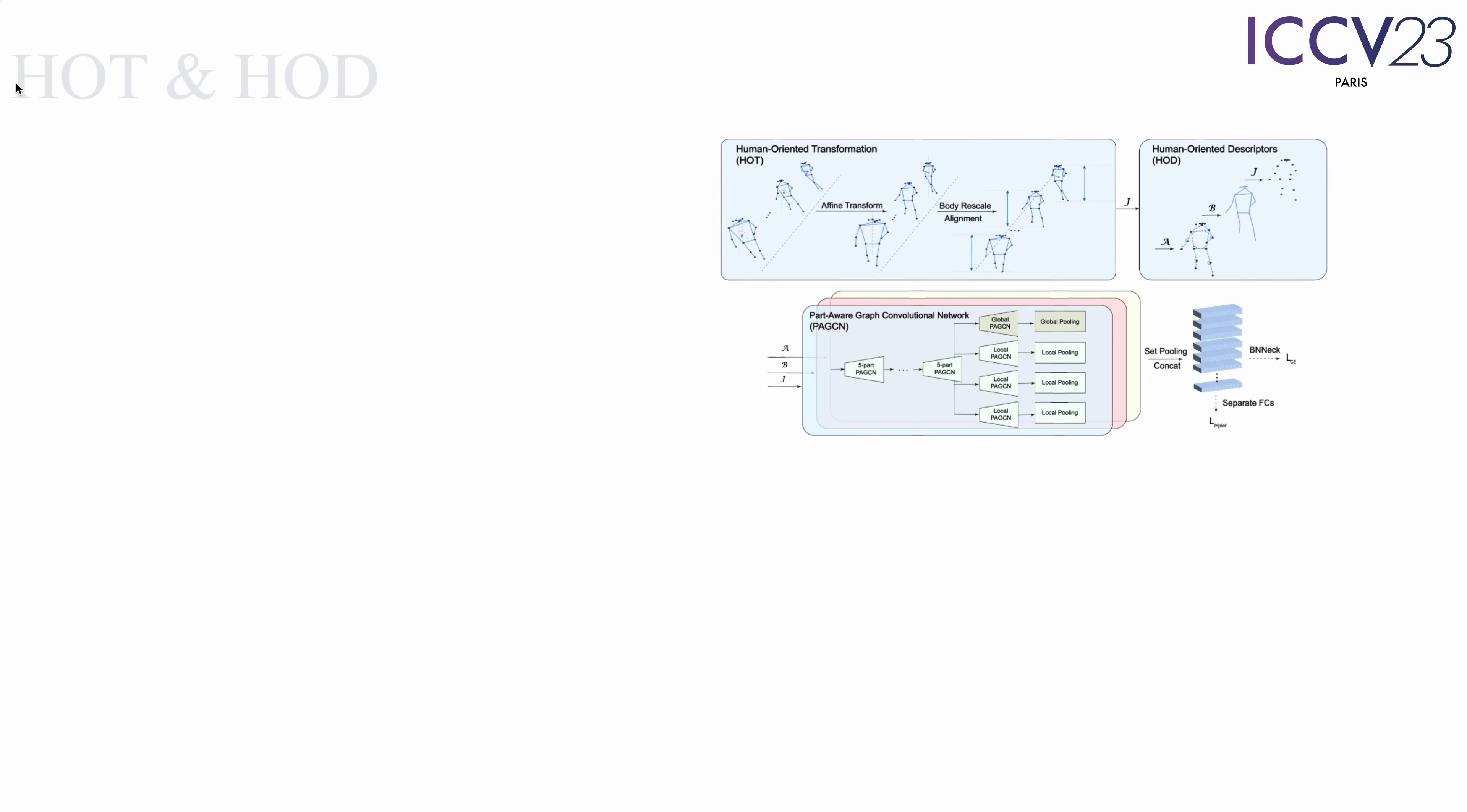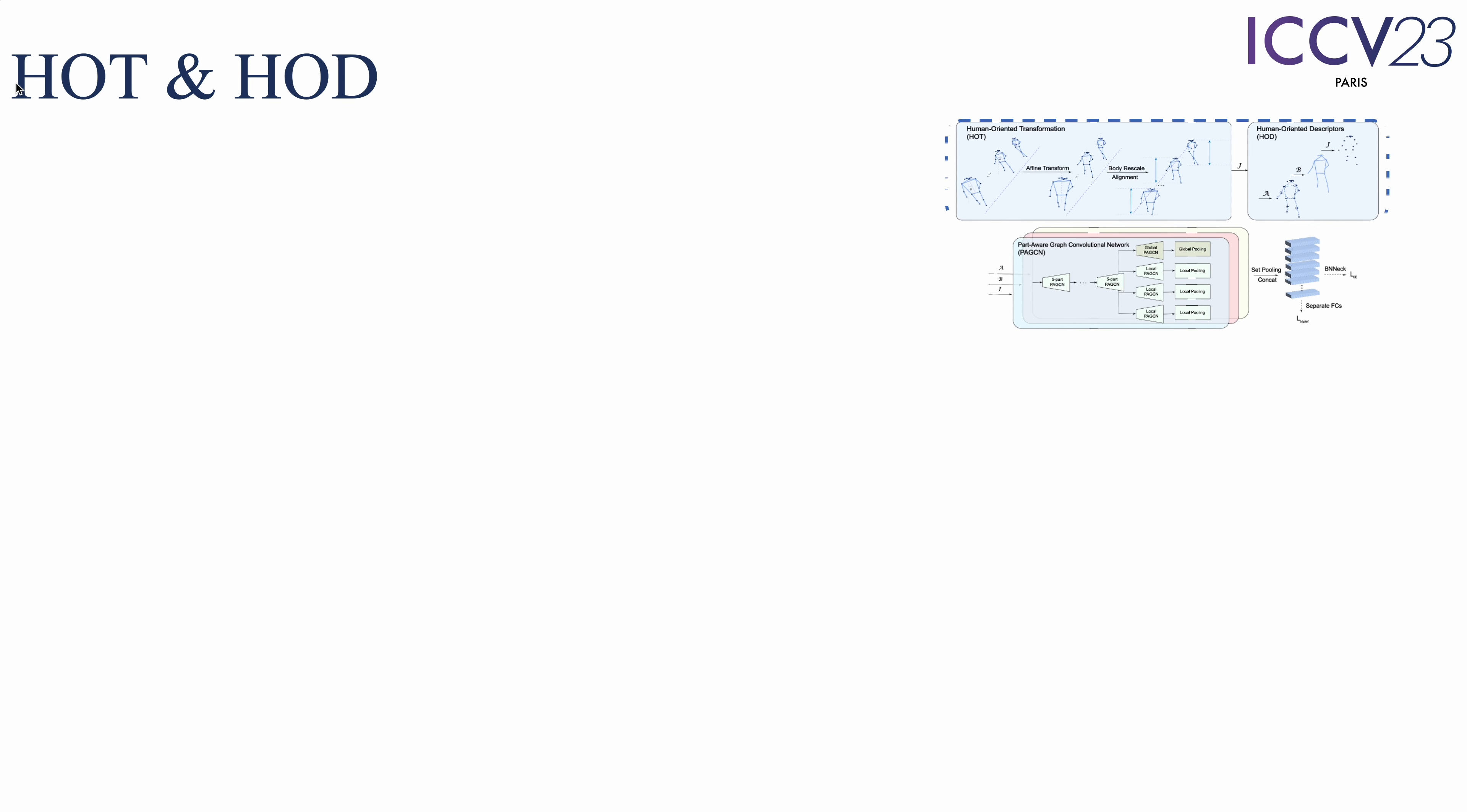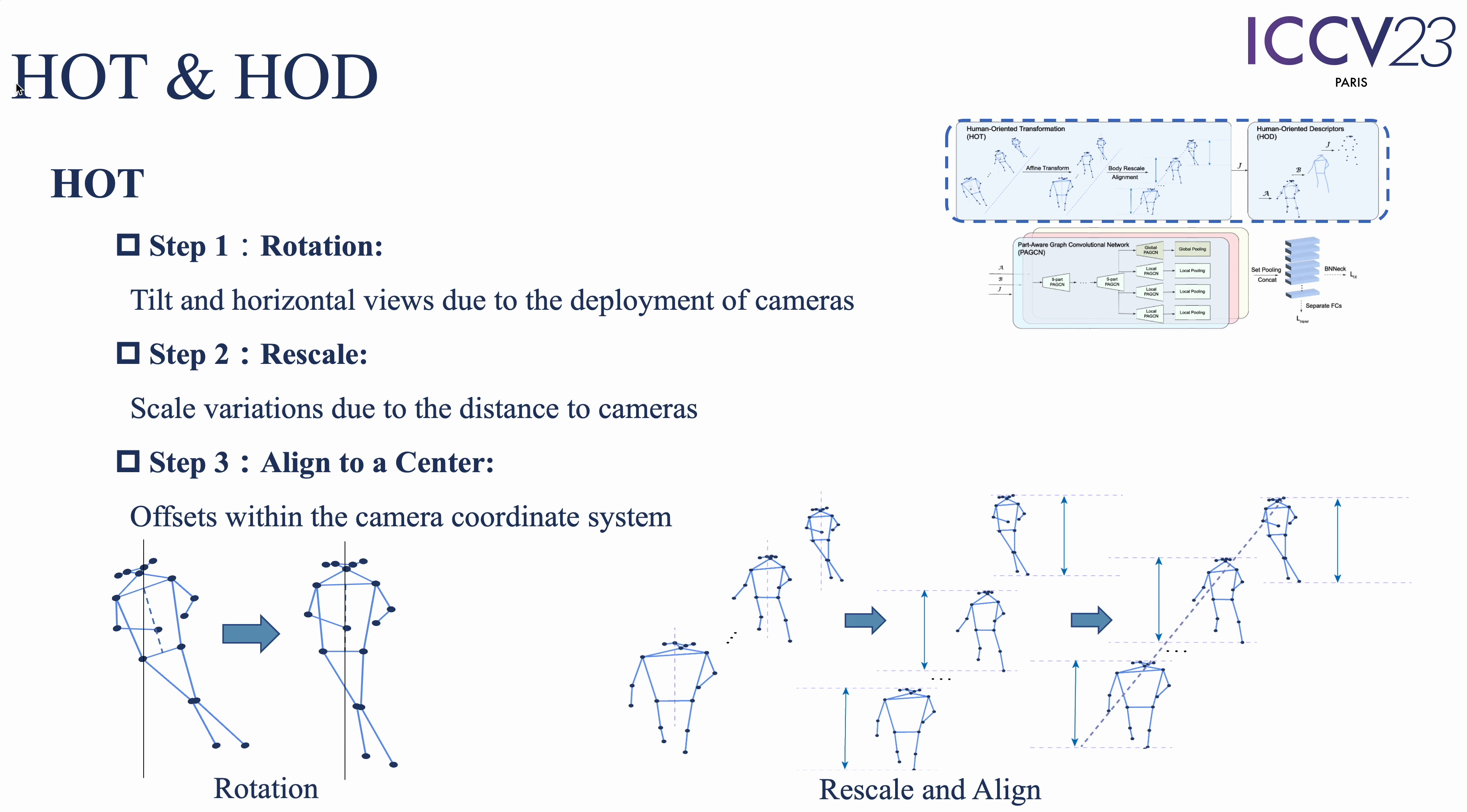Specifically, in the HOT module, a series of human-oriented operations are proposed to facilitate a uniform input that overcomes problems caused by various environmental covariances. HOT consists of three phases: rotation, body-rescale, and alignment, to eliminate environment covariance like viewpoints, distance away from the camera, offset noises, and etc.